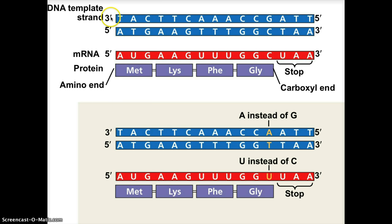So first, let's look at the top. These blue strands are our double-stranded DNA molecule, and they've told us which one is our template strand — that's this top one right here. The first step is transcription. Transcription takes the template DNA strand and adds complementary mRNA nucleotides. That's down here — you can see this is labeled mRNA in red. Here's our mRNA molecule transcribed from our template strand. Next is translation.